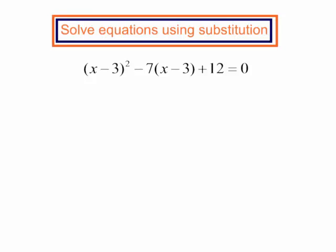We are going to solve some equations using substitution. I have x minus 3 squared minus 7 times x minus 3 plus 12 equals 0.